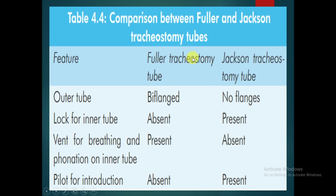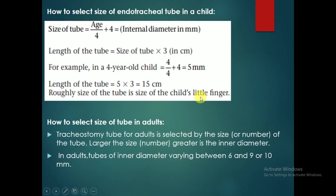Comparison between Fuller's and Jackson tracheostomy tubes: in Fuller's type the outer tube is bi-flanged; in Jackson type there are no flanks. A lock for the inner tube is absent in Fuller's but present in Jackson. A window for breathing and phonation on the inner tube is present in Fuller's but absent in Jackson. A pilot for introduction is absent in Fuller's but present in Jackson.